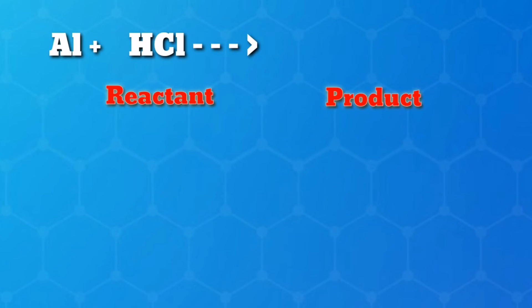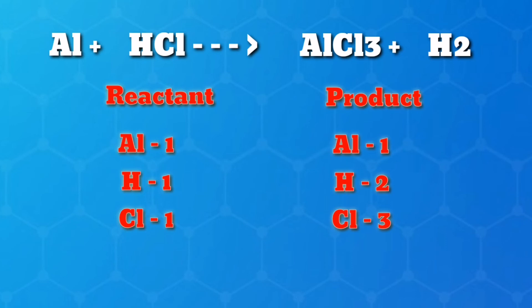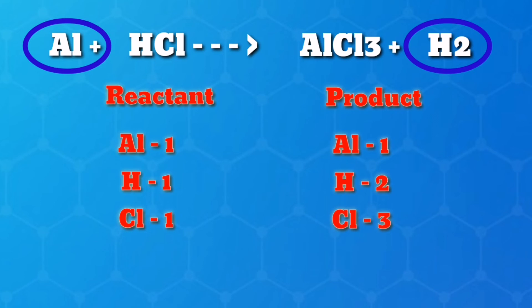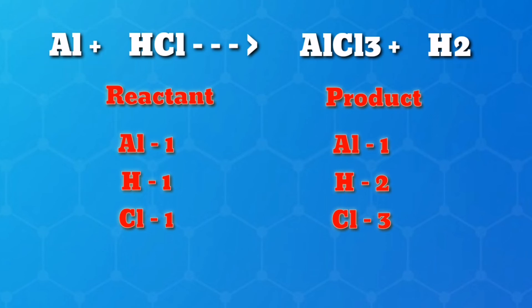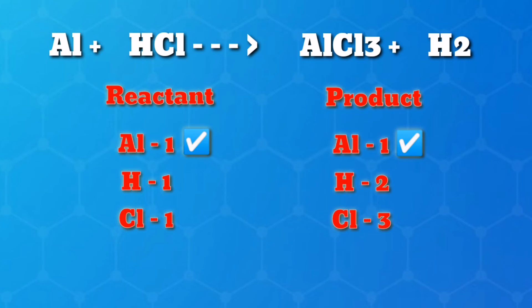How about aluminum plus hydrochloric acid? Give the product before balancing. This is a single replacement reaction. Can aluminum replace hydrogen? Certainly yes. Therefore, the products are aluminum chloride and hydrogen gas. Whenever a single atom is alone on either side of the equation, it is easiest to start with that element. We will start by counting the aluminum atoms: there is one on the left and one on the right, so we do not need to add any coefficients yet.